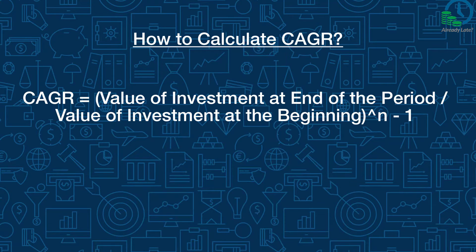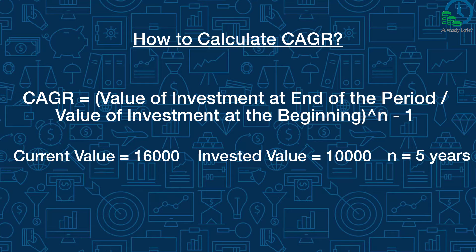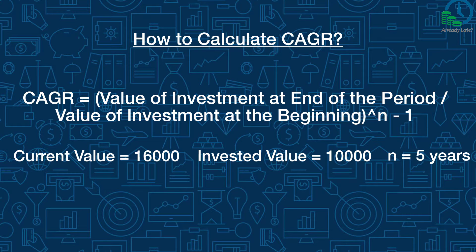Let's calculate CAGR for the same example we started this video with. The current value is 16,000, the invested value is 10,000, n is 5 years, and your CAGR comes to 9.86%. CAGR is extremely useful to compare past returns of different investments.